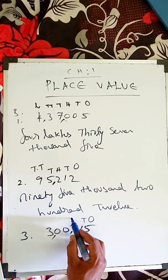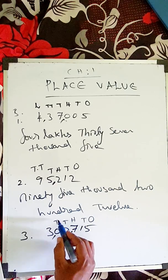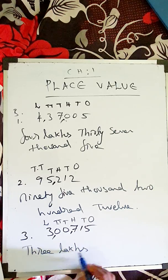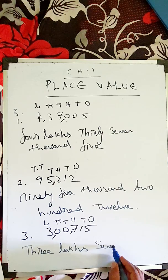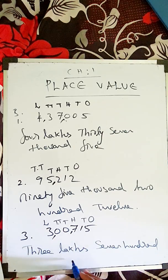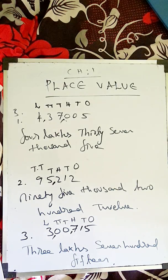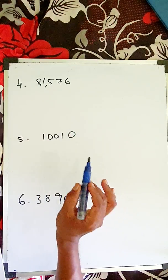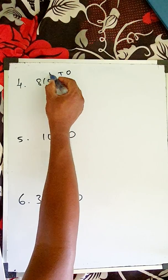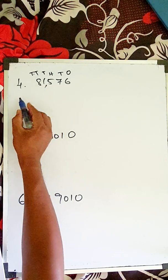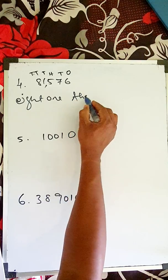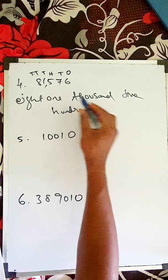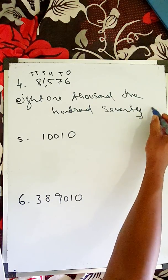The last one has ones, tens, hundreds, thousands, ten thousands, and lakhs. You can see three lakhs here, so write 'three lakhs.' Ten thousands and thousands give nothing, so go straight to hundreds — seven hundred and fifteen. For number four, first three numbers, put a comma, then two numbers. Eighty-one is in thousands, so eighty-one thousand.